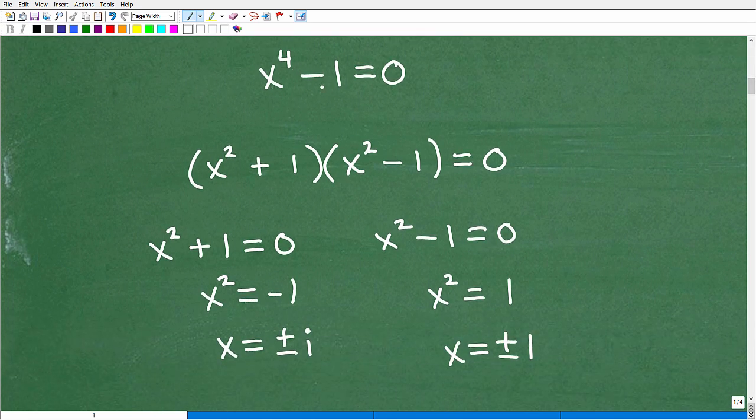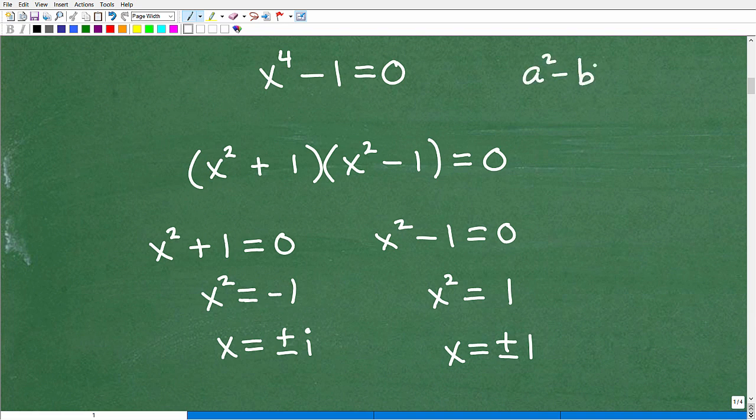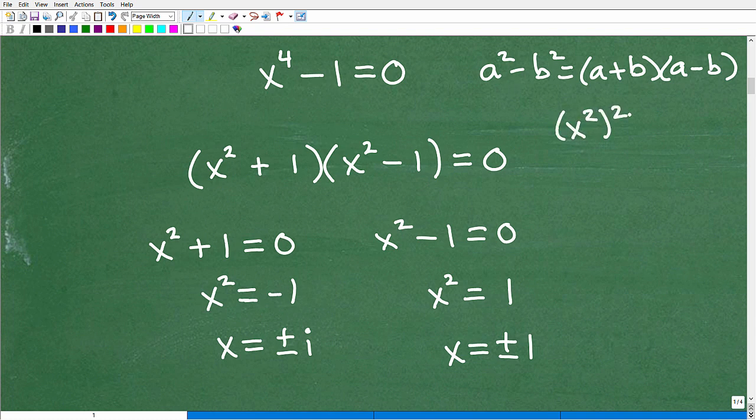Okay, so here we have x to the 4th minus 1. You need to recognize that this is a difference of 2 squared situation. This is a difference of 2 squared. We can see we have x to the 4th minus 1. Well, this is x squared squared minus 1 squared. So, this is a difference of 2 squared. And when we follow this rule, we could factor x to the 4th minus 1 like so. So, anytime you can factor in algebra when you're dealing with an equation, always do so.